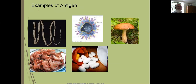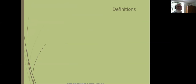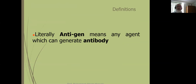These are examples of antigens — you can see it includes some foods, microbes, some plants, and even some medicines. Let us start with the literal meaning of antigen. Literally, antigen means any agent which can generate antibody.